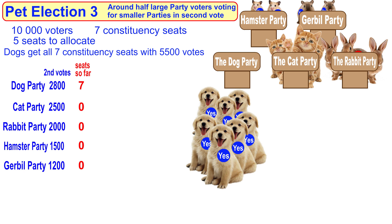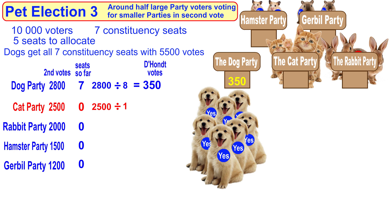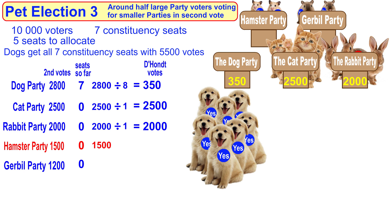On seats so far, as in the last election, since the dog party got all the constituency seats, the dog party has 7 — plus 1 is 8 — so it's divided by 8, leaving only 350. The cat party has zero seats, so adding one gives you one, keeping it at 2,500. The rabbit party is divided by one, so it stays the same. The hamster party's vote stays at 1,500 and the gerbil party stays at its 1,200 votes.